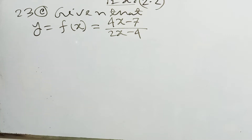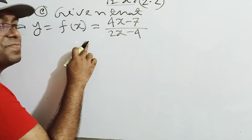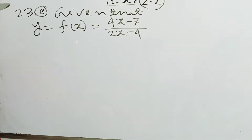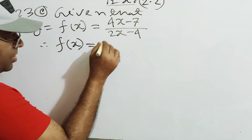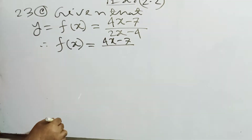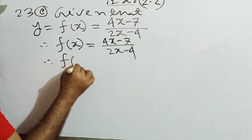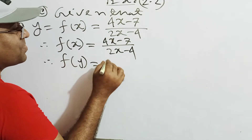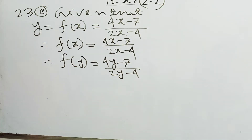So, f of y equals x. We will change f of x to f of y. So f of y equals (4y minus 7) over (2y minus 4).